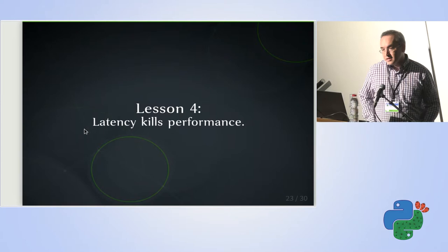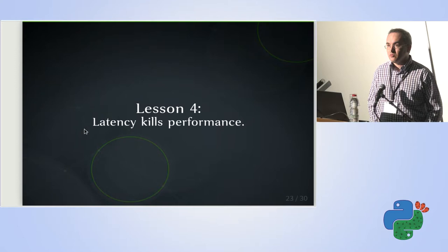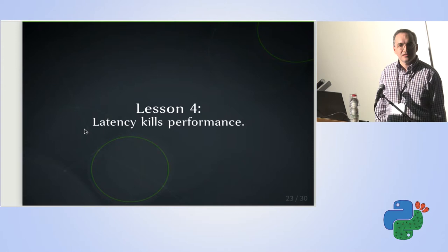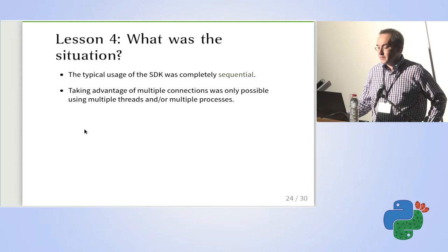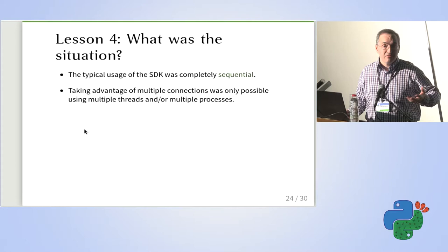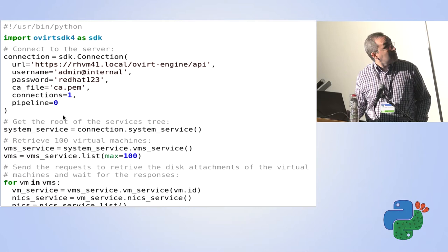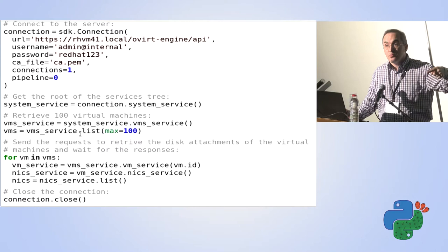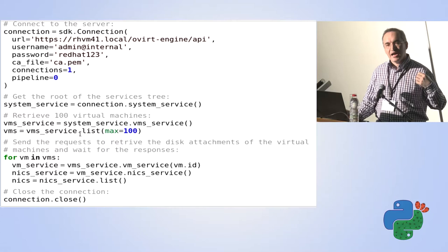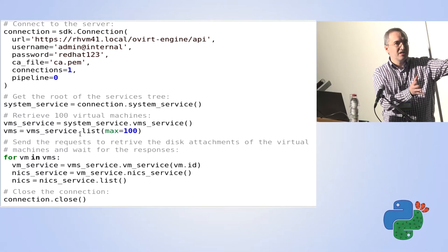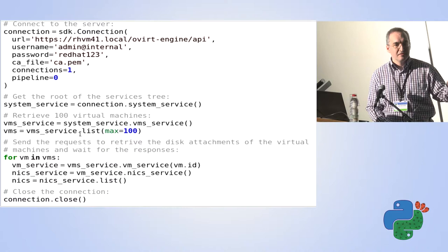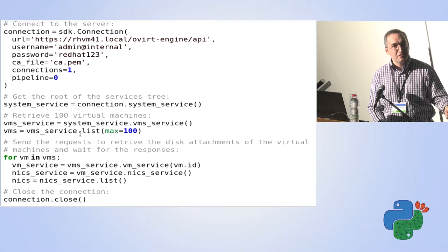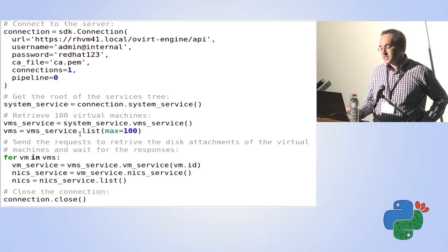The fourth lesson is about latency — something we usually forget when developing, because we typically test with a server very close to us and latency is not a problem. But in real situations, latency is a big problem. The typical use case for a program using the SDK is sequential: get a connection, retrieve 100 VMs, then loop and retrieve the network interface cards for each VM. The problem is you are sending one request, waiting for latency, sending another, waiting again — there is a lot of waiting, and every wait is paying the cost of latency.